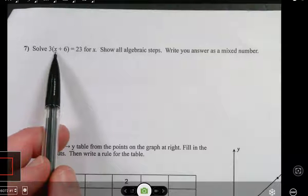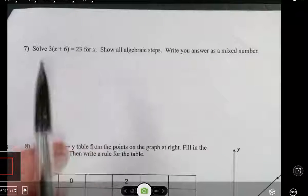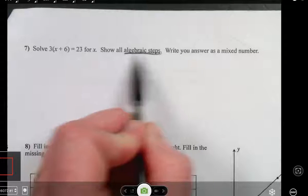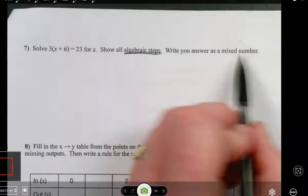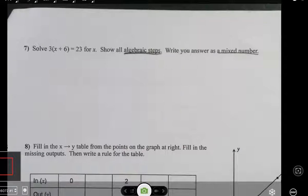Solve 3 times the quantity x plus 6 equals 23 for x. Show all algebraic steps—that means no guessing and checking—and write your answer as a mixed number. So that's a hint. Your answer should be a mixed number.